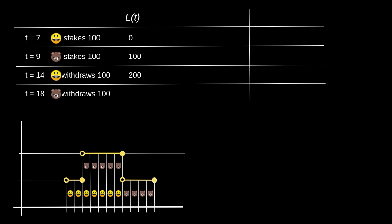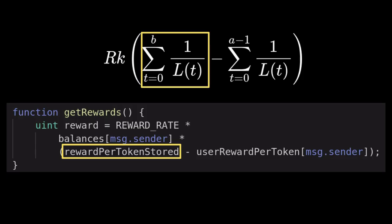At t equals 14, both Alice and Bob have 100 tokens staked, giving 200 total. Alice withdraws 100, but `elbt` is updated after t equals 14, so the total is still 200 at that point. At t equals 18, Bob withdraws 100 tokens; `elbt` is updated after t equals 18, so at that point there are still 100 tokens staked by Bob.